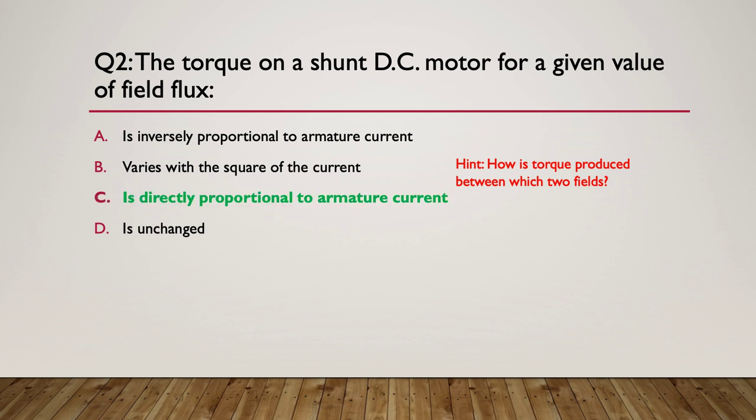The answer is C — they are directly proportional to the armature current. So the more armature current you have, the stronger it will push around, the more torque. Less armature current, less torque. So they are directly proportional.